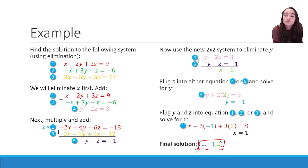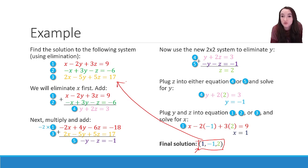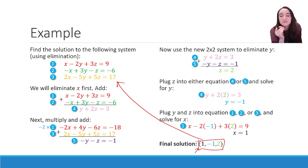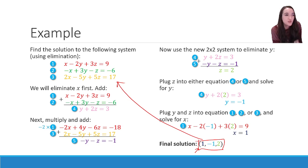This was a situation where we got a singular solution — this is the only solution to the system. Always go back and plug your answer into all three original equations to check your work, because there's so much arithmetic that can go wrong. As long as everything checks out, there's no other possible answer.